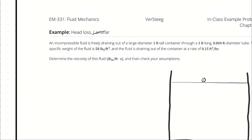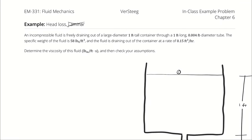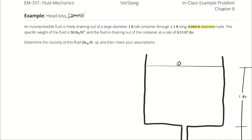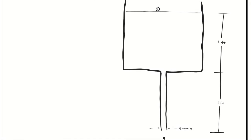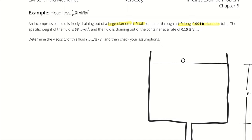The word laminar appears in the example category, but let's ignore that for a moment. We can parse out some of the information from the problem statement. The tube diameter is 0.004 feet. The container is of large diameter, so we'll assume the velocity at the top of the fluid is approximately zero. The container is 1 foot tall and the hose is 1 foot long, so the total height difference between states 1 and 2 is 2 feet. We have a volumetric flow rate which we can use with the tube diameter to find average velocity, and we know the specific weight which we can use with standard gravity to calculate density.